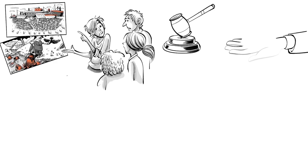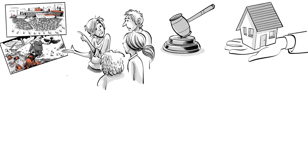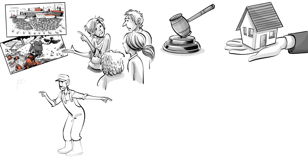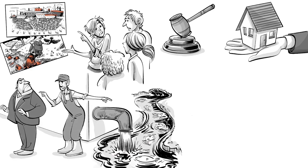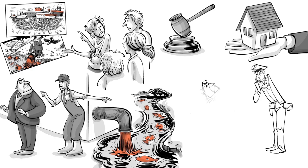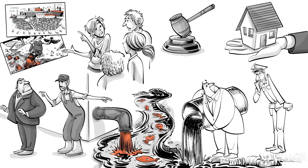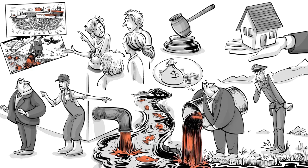To combat negative externalities and avoid such a tragedy, we can do four things: create public awareness, assign property rights appropriately, force the internalization of negative externalities, or turn to regulation and fines.